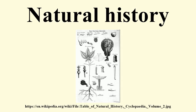Natural history is the research and study of organisms including animals, fungi and plants in their environment, leaning more towards observational than experimental methods of study. It encompasses scientific research but is not limited to it, with articles nowadays more often published in science magazines than in academic journals. Grouped among the natural sciences, natural history is the systematic study of any category of natural objects or organisms.